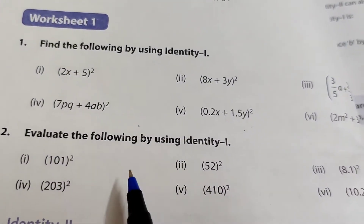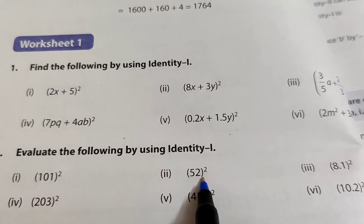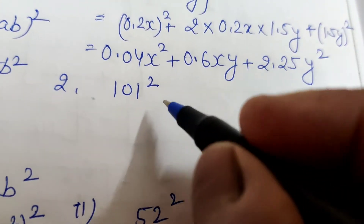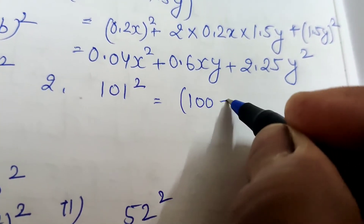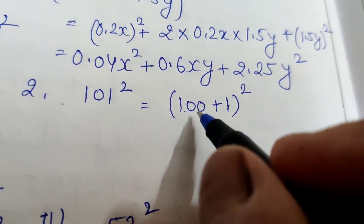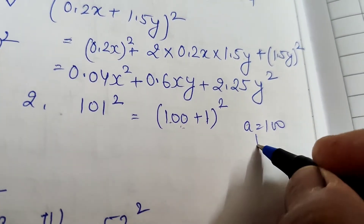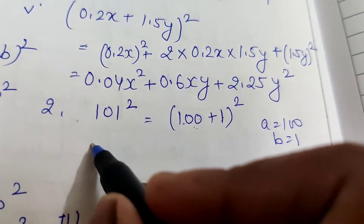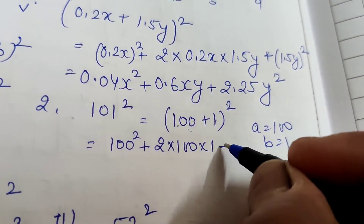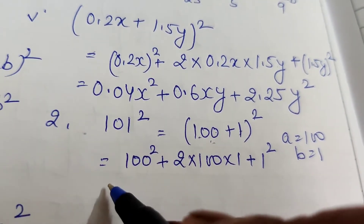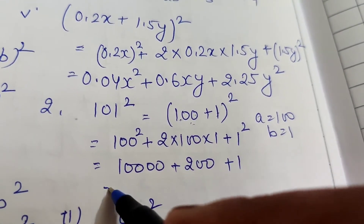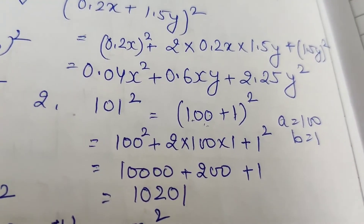Question 2: evaluate the following using identity 1 — 101², 52², 8.1², and so on. For 101², write it as (100 + 1)². Here a = 100 and b = 1. Using the formula: 100² + 2×100×1 + 1² = 10000 + 200 + 1 = 10201.